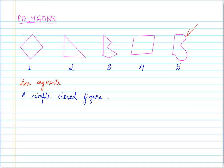Simple closed figure made up entirely of line segments. This is the definition of a polygon. So this is the definition of a polygon.